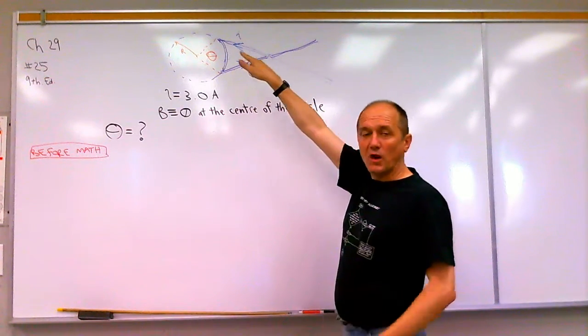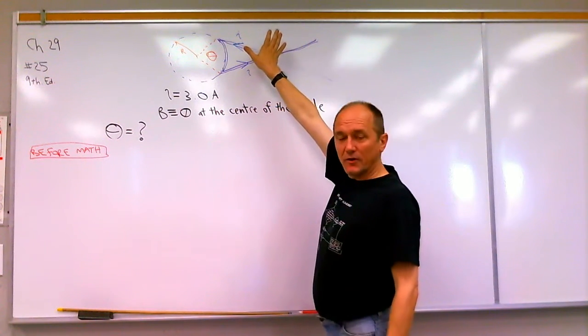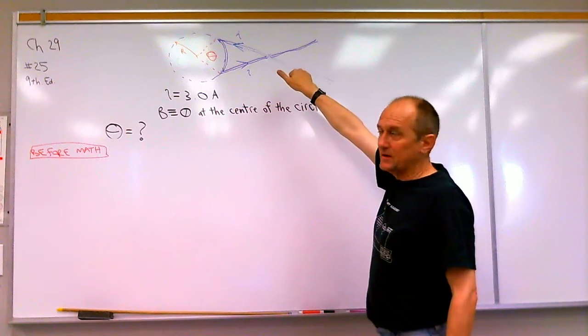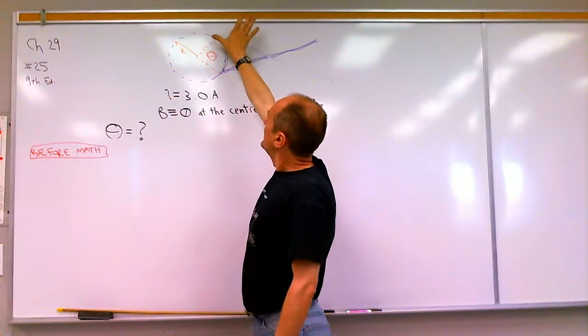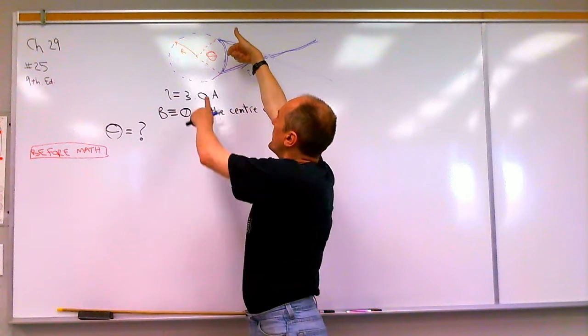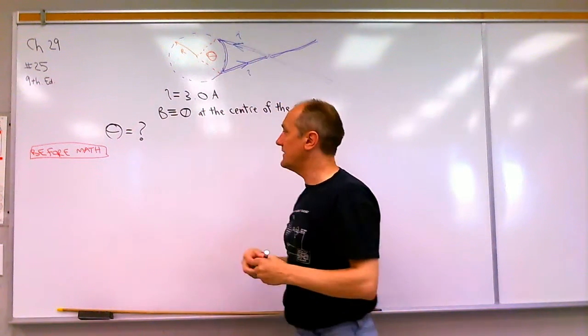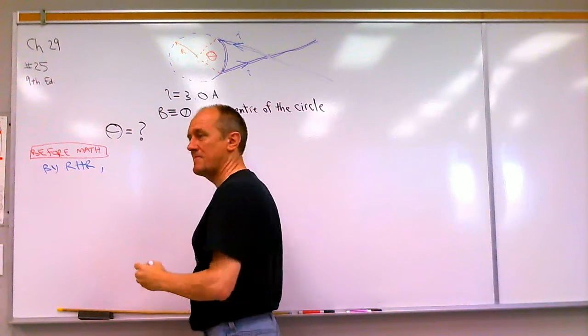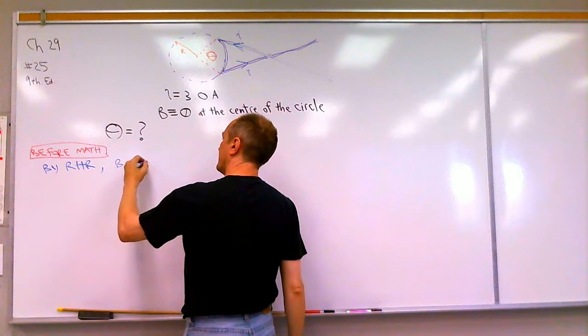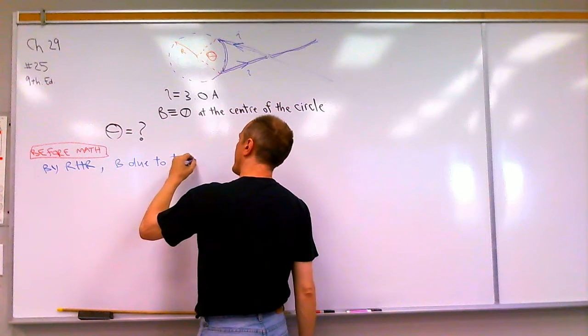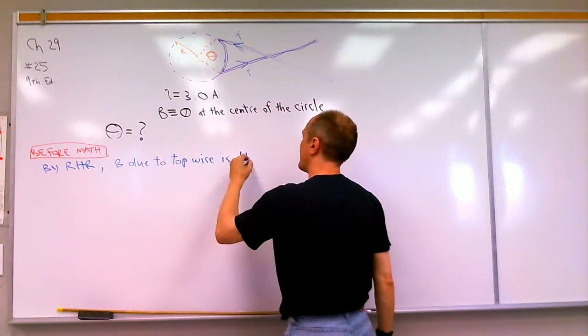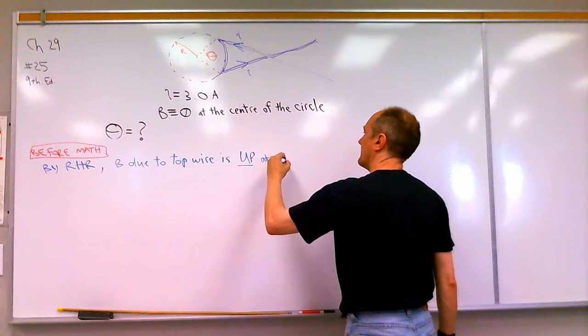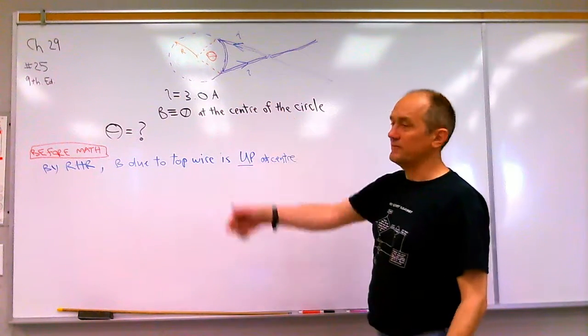The right hand rule for a long wire says that if we point our thumb of our right hand in the direction of the current flow, then our fingers curl in the direction of the magnetic field. So that means at this end of the wire, if the current flow is going this way, and as we curl this way, then the magnetic field will be coming up in the center. So by the right hand rule, the field is up at the center. And by up, I mean out of the board.